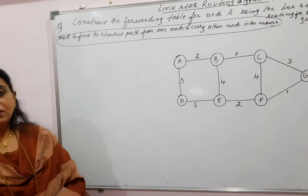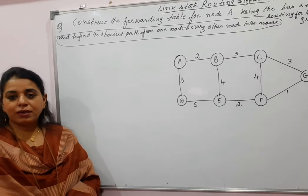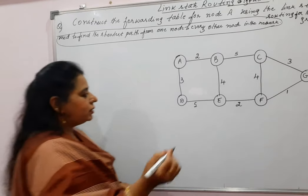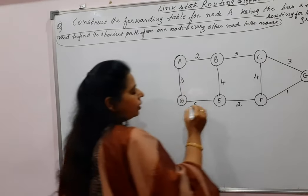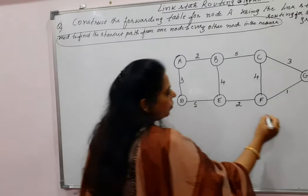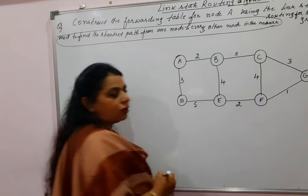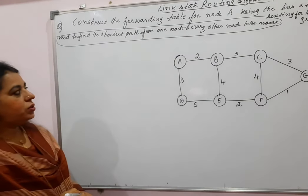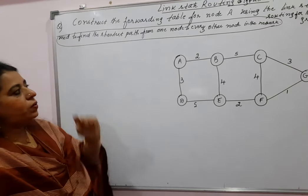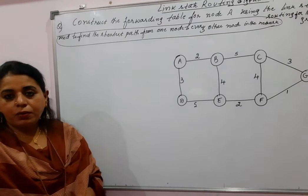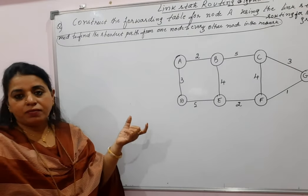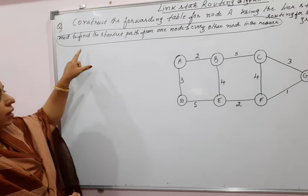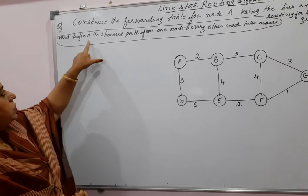This algorithm works on Dijkstra's algorithm. In link state routing, every node in the network must run Dijkstra's algorithm to arrive at the shortest path from one node to every other node in the network. The basic function of this routing algorithm is to find the shortest path from one node to every other node.